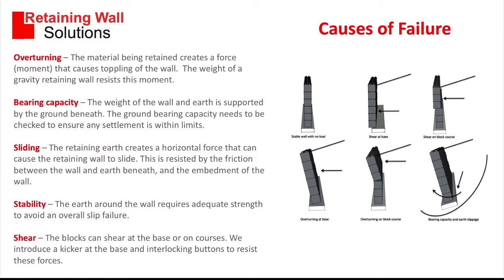There are five major causes of failure of a retaining wall. The diagram on the right-hand side shows those modes of failure and the explanations on the left-hand side. So there are five modes: overturning, bearing capacity, sliding, stability, and shear. You can have a read of this slide and learn a little bit about how retaining walls fail.